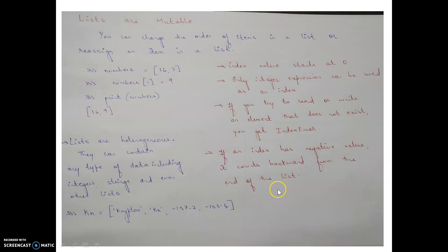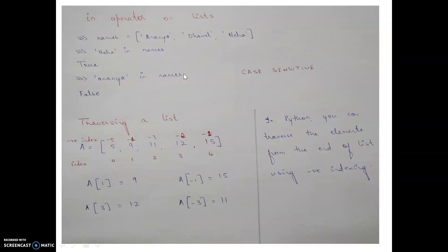If an index has a negative value, it counts backward from the end of the list. Python has a special feature where you can access list elements from the right end. Generally we access arrays from the left end only, but in Python you are also allowed to access from the right end.